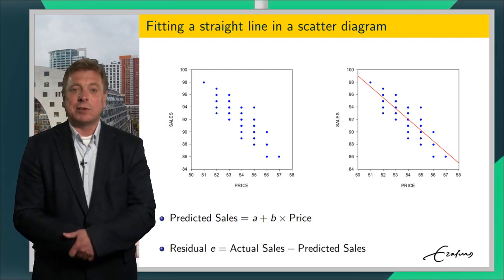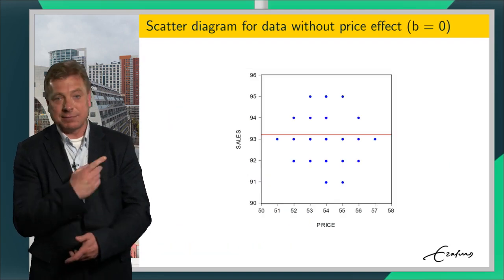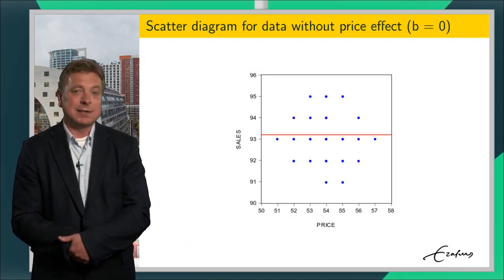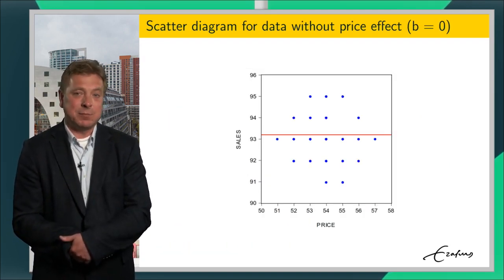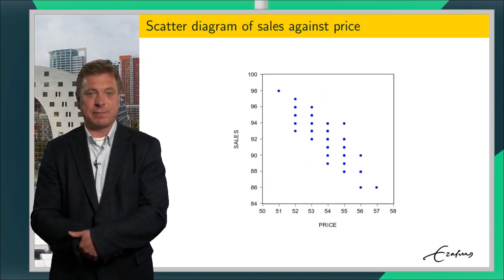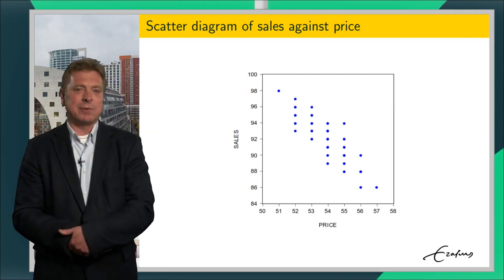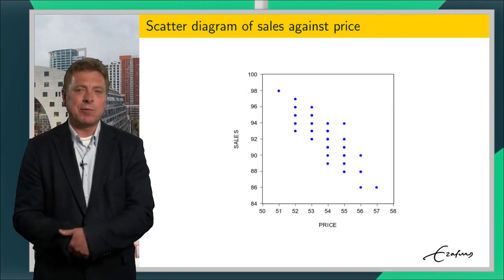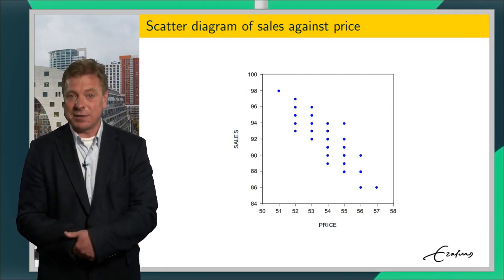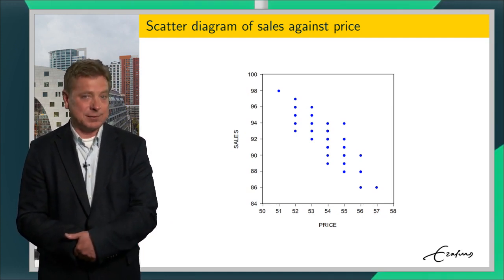When the slope is equal to zero, this corresponds to observations where there does not seem to be any relationship between sales and price. Going back to the original scatter diagram, the values of the coefficients A and B are of interest to the store manager, as they offer the opportunity to predict sales for a given price.